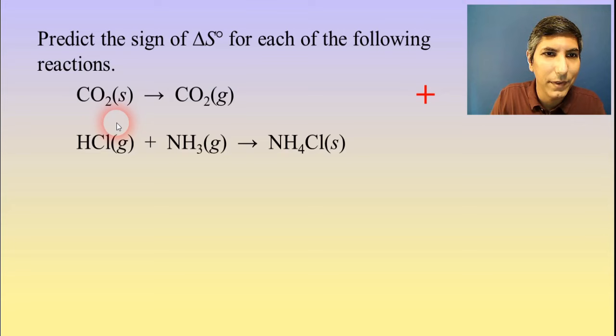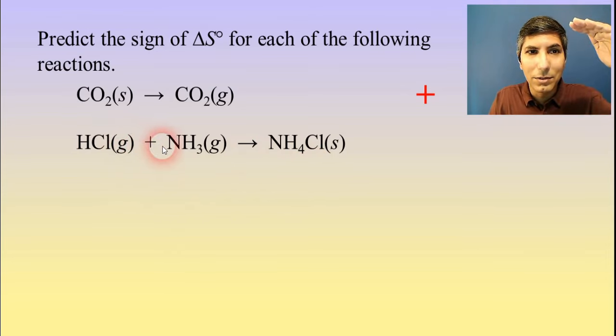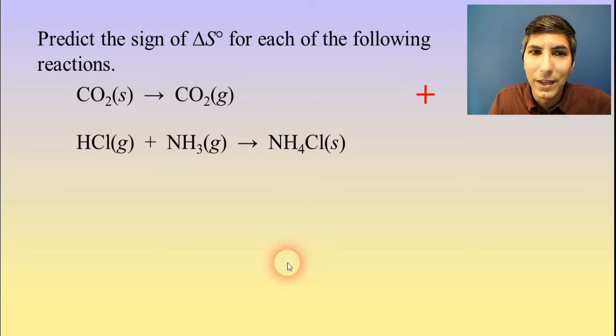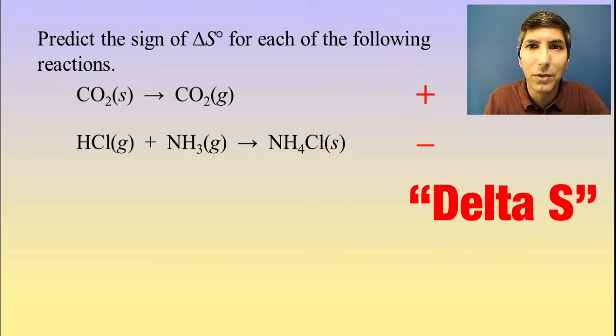How about this reaction? We have HCl gas plus ammonia gas yields ammonium chloride solid. Well, in this case, we're moving from gas molecules, which have a high entropy, down to solid or a solid state, which has the lowest entropy. So gas down to solid, that's a drop in entropy, isn't it? So that's why we'd say this has a negative sign for delta S.